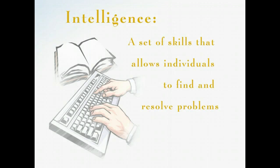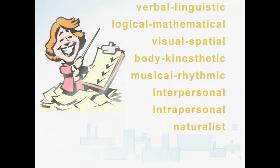Under Gardner's theory, an intelligence can be defined as a set of skills that allows individuals to find and resolve problems. A student may have all intelligences, but generally it's believed that one or more intelligences are more dominant than others.